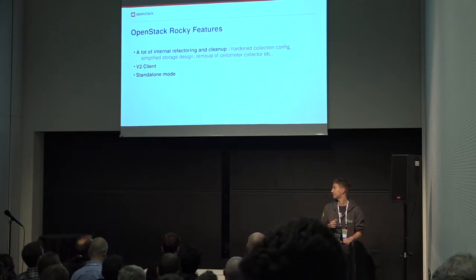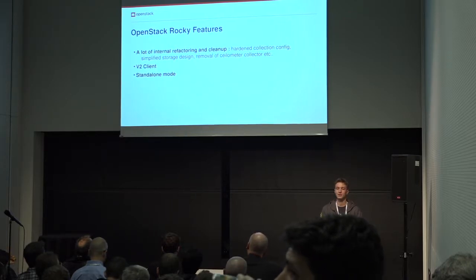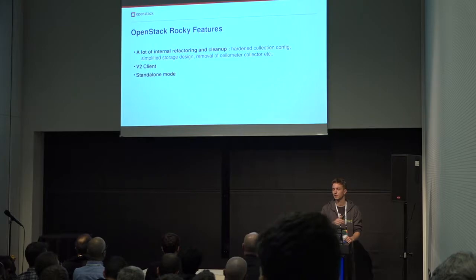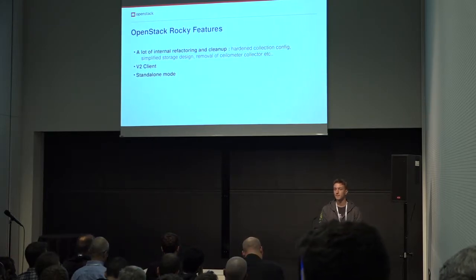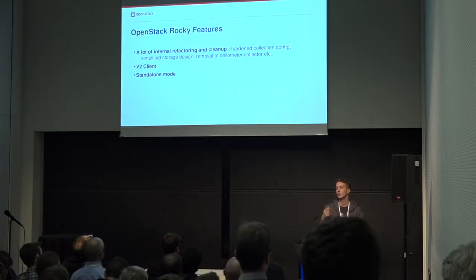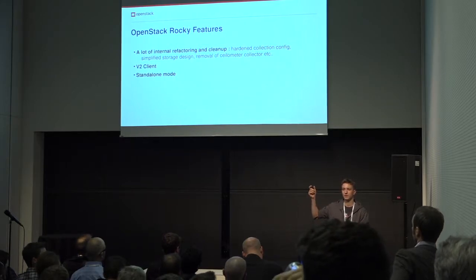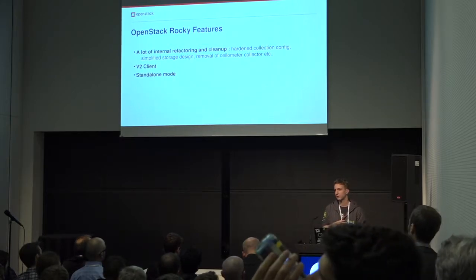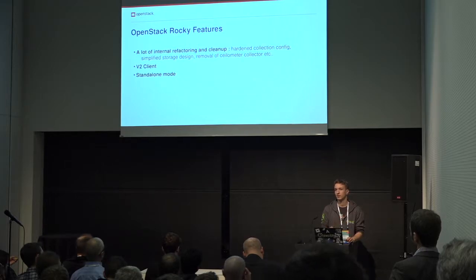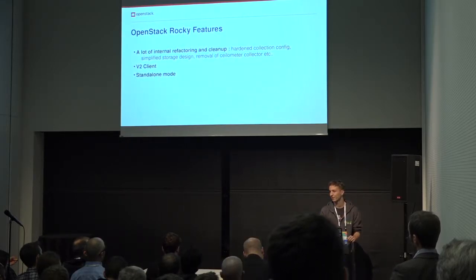Most importantly, Cloud Kitty can now be used in standalone mode, which means you don't need an OpenStack cloud or a Keystone endpoint. For example, a customer of our company used Gnocchi in standalone mode with VMware and a collector that pushed VMware metrics into Gnocchi, and Cloud Kitty was used to process those metrics. Any custom metrics you push into Gnocchi, Prometheus, or Monasca can be rated with Cloud Kitty.